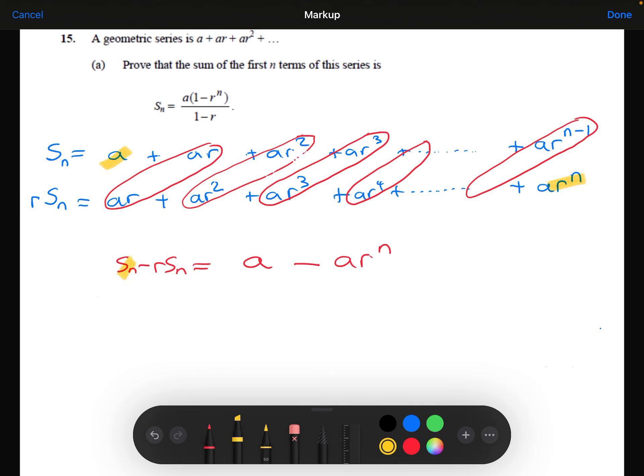All I'm going to do now is factorize the S_n from the left hand side. Then I'm going to factorize the A out from the right hand side. And then I'm going to divide both sides to make the sum of the first n terms the subject. And then that's what we needed to show. So that's that proof done.